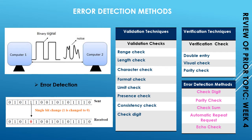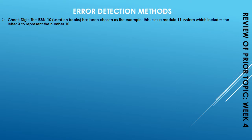In the context of your syllabus, there are a few error detection methods we discussed in detail: check digit, parity check, checksum, automatic repeat request, and echo check. The check digit method is a method that can avoid transmission, transcription, and transposition errors. A check digit is the final digit in a code of numbers, calculated from all the other digits. Its purpose is to spot human error on data entry.